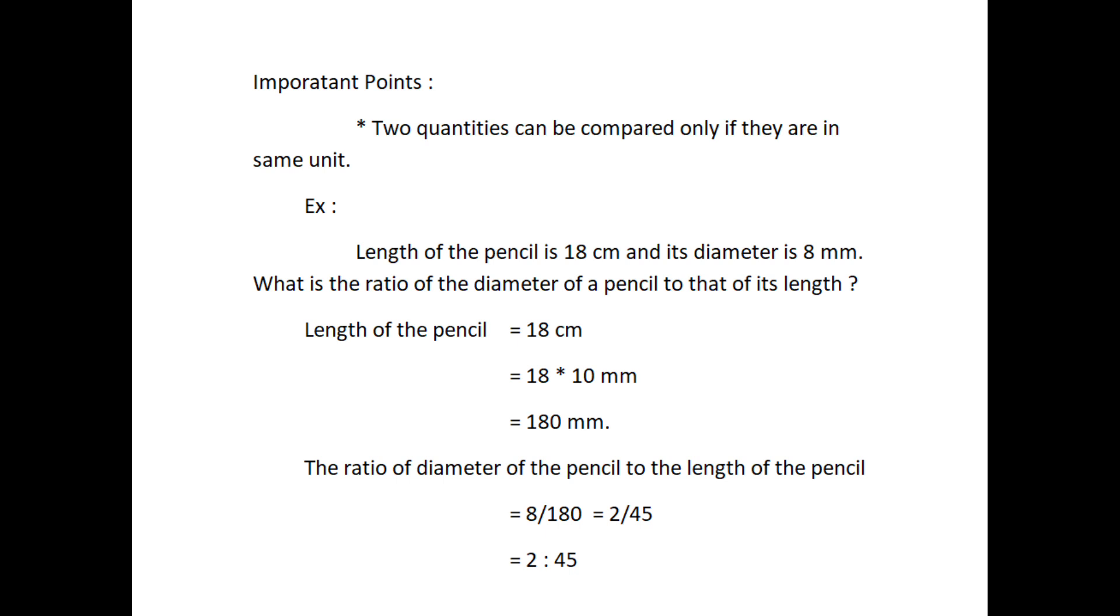We first need to convert them into same unit. Therefore, length of the pencil equals 18 cm which equals 18 into 10 mm which equals 180 mm. The ratio of diameter of the pencil to the length of the pencil equals 8 divided by 180 which equals 2 divided by 45 which equals 2 is to 45.